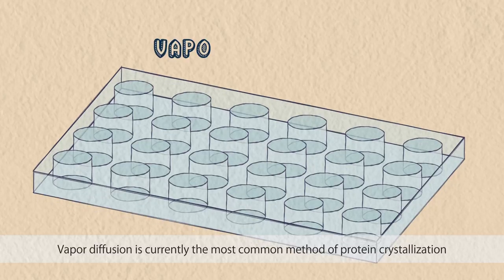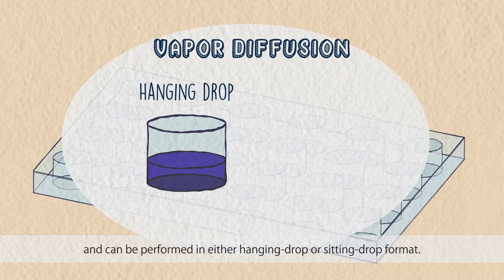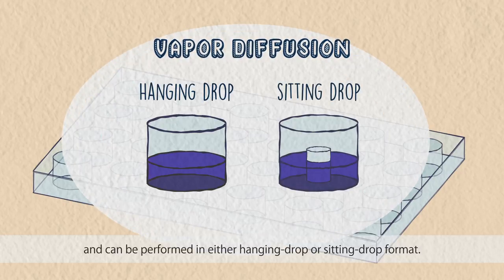Vapor diffusion is currently the most common method of protein crystallization and can be performed in either hanging drop or sitting drop format.